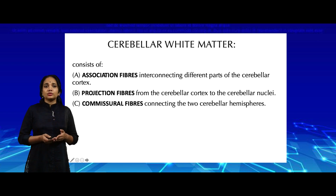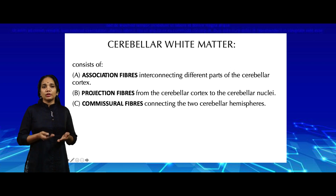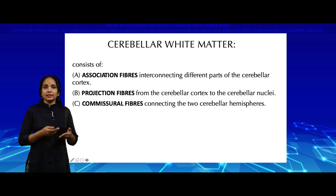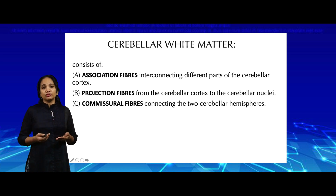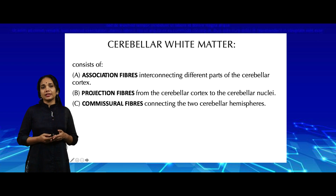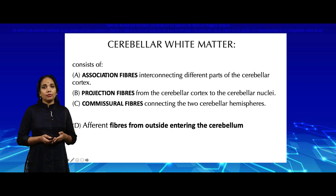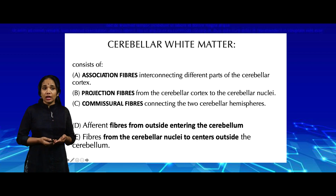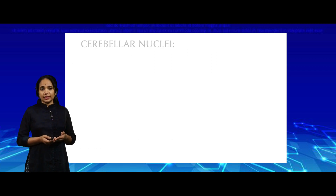The cerebellar white matter is very similar to the cerebral white matter in that it also has association fibers, projection fibers, and commissural fibers. Association fibers interconnect different parts of the cerebellar cortex of the same hemisphere. Projection fibers project from the cerebellar cortex to the deeper nuclei. Commissural fibers interconnect the two cerebellar hemispheres. The cerebellum also has afferent fibers coming in from outside and efferent outputs going out from the cerebellar nuclei to centers outside the cerebellum.